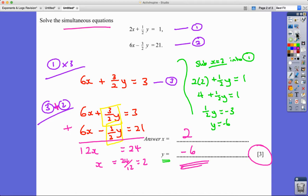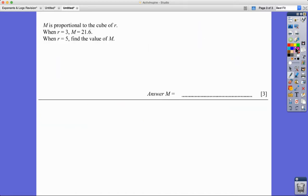And the third and final question is this one. Easily forgotten by students how to do this. So it says M is proportional, there's my proportionality sign, to the cube of R. So that means R cubed. It doesn't say inverse anywhere, so it's directly proportional.